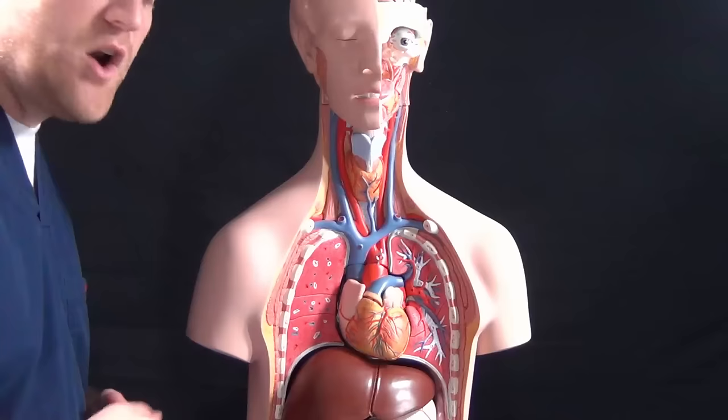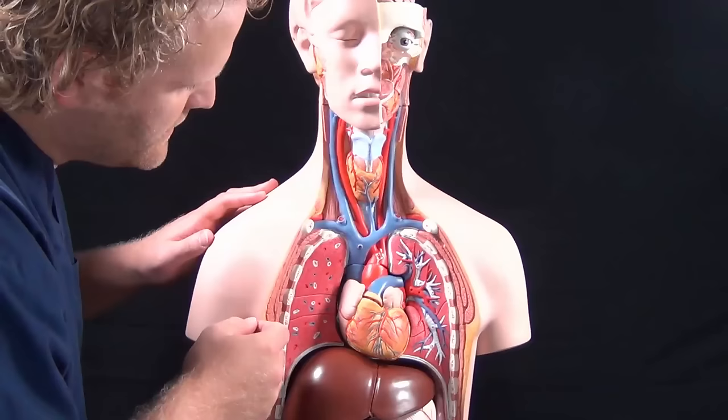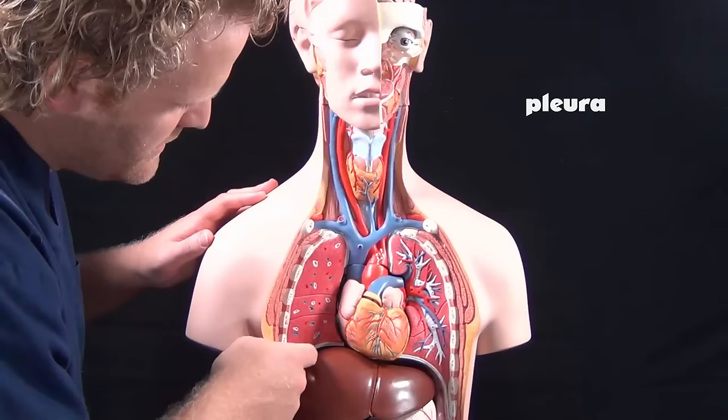When we talk about pneumothorax, we're talking about air getting into the pleural space. So here's our lungs. We have our left lung and our right lung. And surrounding that lung, we have what's called the pleura. The pleura is a little protective covering that surrounds our lungs.